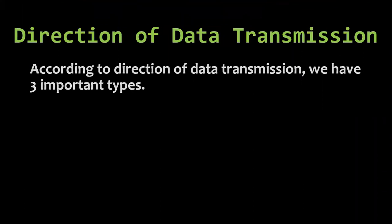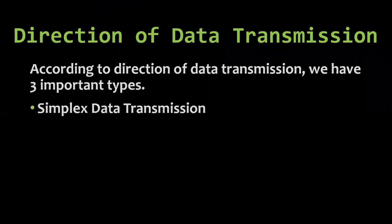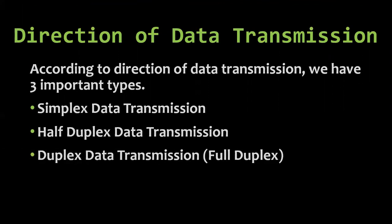Now we are going to discuss the direction of data transmission. We have three major types: number one, simplex data transmission; number two, half duplex data transmission; and number three, duplex data transmission, also known as full duplex. These are the three basic types of data transmission according to direction.